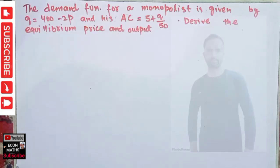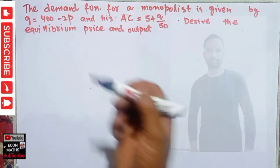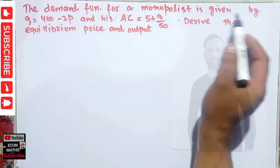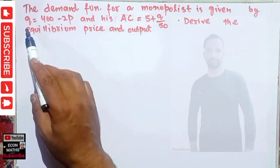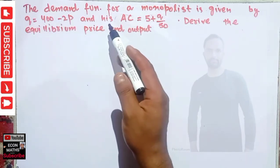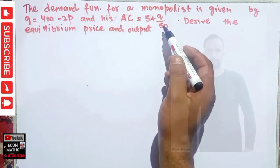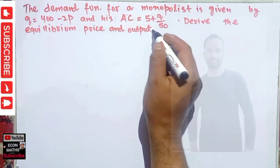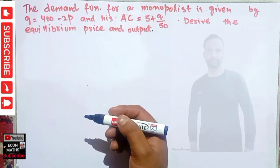In this video we will solve another numerical on finding the equilibrium price and output. The question is: the demand function for a monopolist is given by Q = 400 − 2P, where Q is the quantity and P is the price, and its average cost is given by 5 + Q/50. We have to derive the equilibrium price and output for the monopolist.